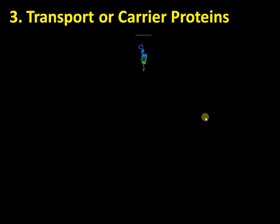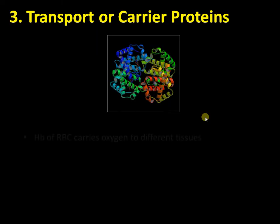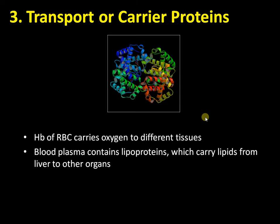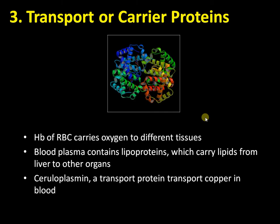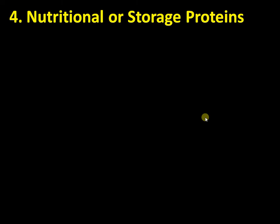A third function is that proteins act as carriers. Hemoglobin carries oxygen to different tissues. Myoglobin is another carrier protein. Blood plasma contains lipoproteins, which carry lipids from the liver to other organs. Ceruloplasmin is a transport protein involved in the transport of copper in the blood. There are also many transmembrane channel proteins through which specific molecules are transported across the membrane.